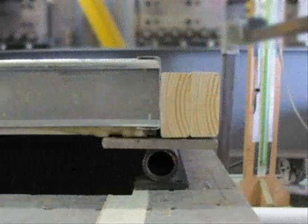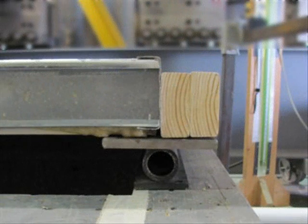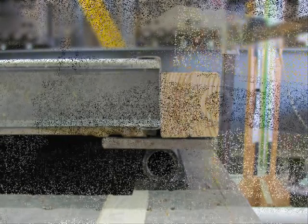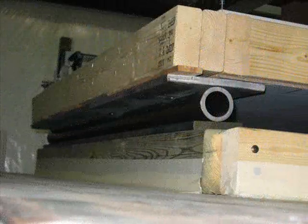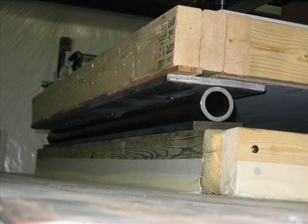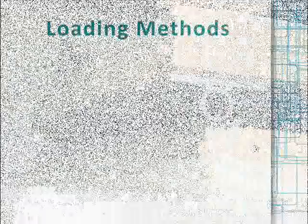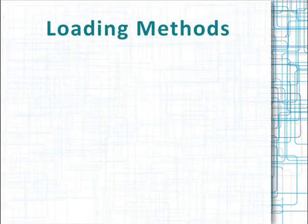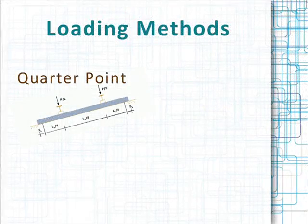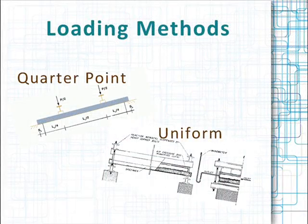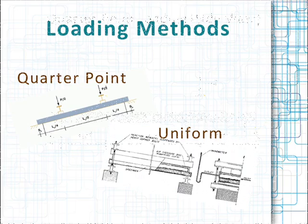The wall assembly is supported by two steel rollers that run parallel to the short dimension of the specimen. These rollers allow free movement of the specimen to the forces applied. There are two different ways to apply the force to the specimen: quarter point loading and uniform loading.